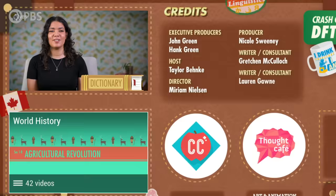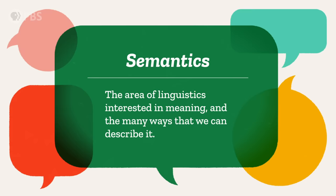Episode over. Wait a sec. The first problem with relying on a dictionary to give a word meaning is that dictionaries are made by people. And the people who write dictionaries, called lexicographers, still need some other way of figuring out what words mean. The second problem is that writing a definition isn't always the most effective way of pinning down the meaning of a word. The area of linguistics interested in meaning and the many ways that we can describe it is semantics.